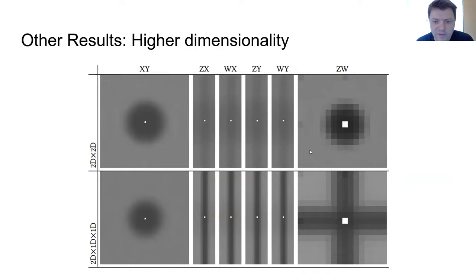So some other results. We found that these algorithms generalize to higher dimensions. So here's some 4D blue noise. Where on the top XY is 2D blue noise and ZW is 2D blue noise. And on the bottom XY is 2D blue noise. But then the Z axis is 1D blue noise. And the W axis is 1D blue noise.